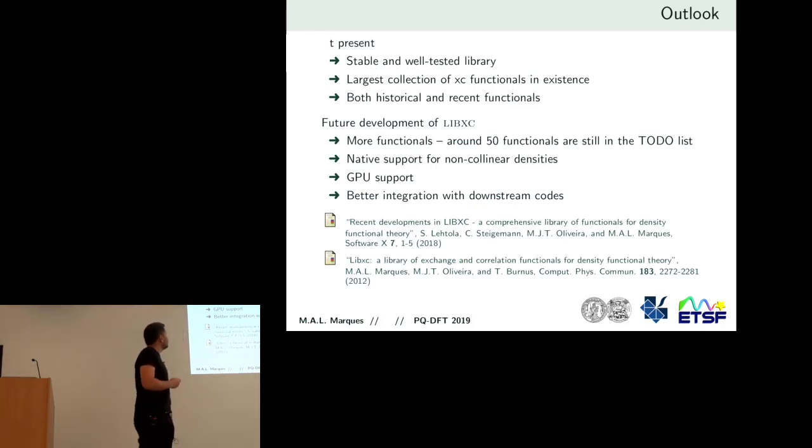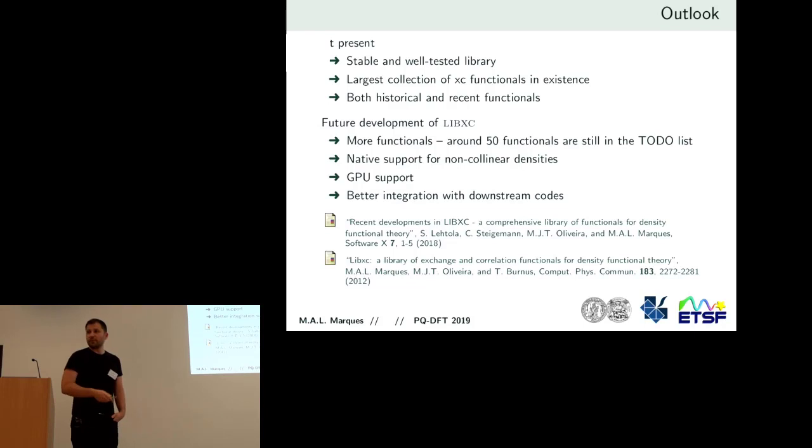At the moment, we have a tested and well, and a really stable library. Things don't really change fast in this library. So, there's not a big problem for the codes that use it. I think it's the largest collection of exchange correlation functionals in existence, simply because it's 20 years of continuously adding functionals, nothing more. We have both historical and recent functionals. So, if you want to reproduce some result from the 80s, you will be able to do it, or even earlier. And now, what we are doing in LibXC, we are adding more functions, of course. I'm thinking this will be probably the next big thing. It's native support for non-collinear densities, so that the codes themselves don't have to do it. And there are several ways of doing it, and there are even current functionals that have direct, some functions that give you direct access to non-collinearity. So, this is probably going to be the next thing.